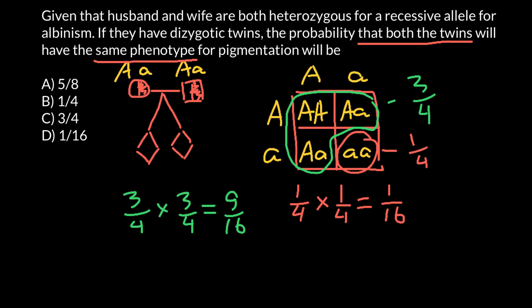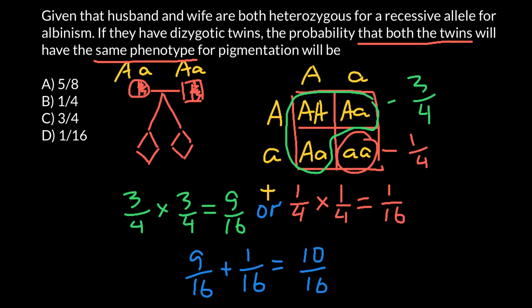The probability that both twins are phenotypically normal is three-quarters multiplied by three-quarters, which equals nine over sixteen. We now have to find the probability that both children would be of the same phenotype — whether both normal or both affected. When we can connect two probabilities with the word OR, we add them. So nine over sixteen plus one over sixteen equals ten over sixteen, which is the same as five over eight.